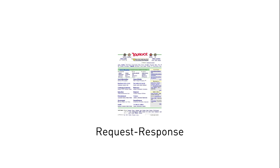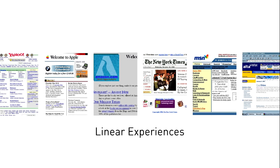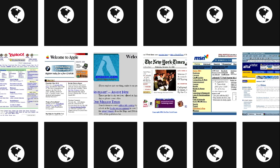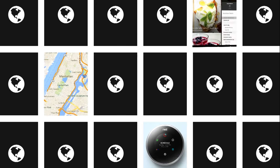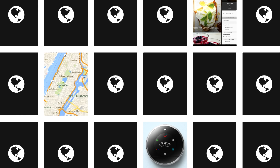So why does designing for real-time even matter? The reigning web paradigm since the genesis of the browser has been request-response. Someone who views a web page sends a request to the content server. The server receives the request and responds with the page. This constraint results in linear experiences punctuated by page refreshes. While it's perfect for the internet's original intent of viewing static documents, we've come a long way since then. Our technology and capabilities have evolved. In 2015, we want the web to do more — to tell us what to eat, to guide us to our next destination, even to adjust our thermostats.